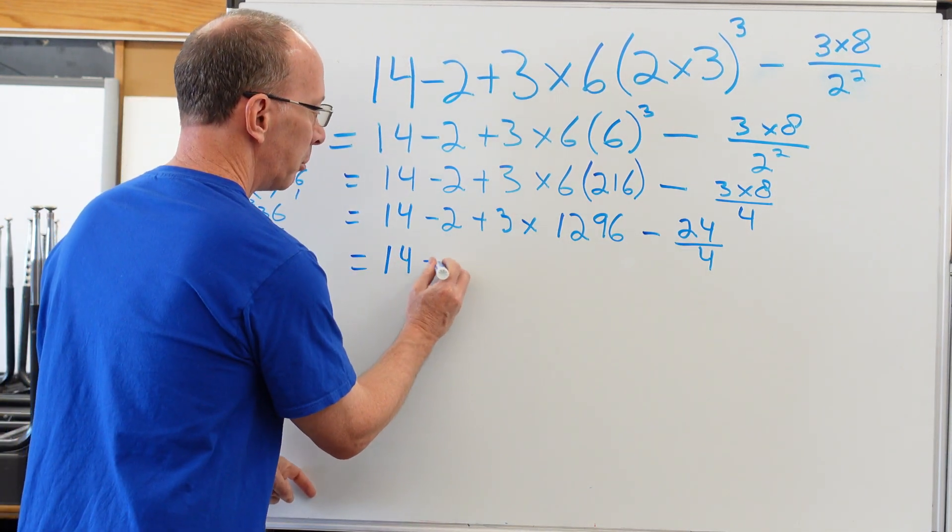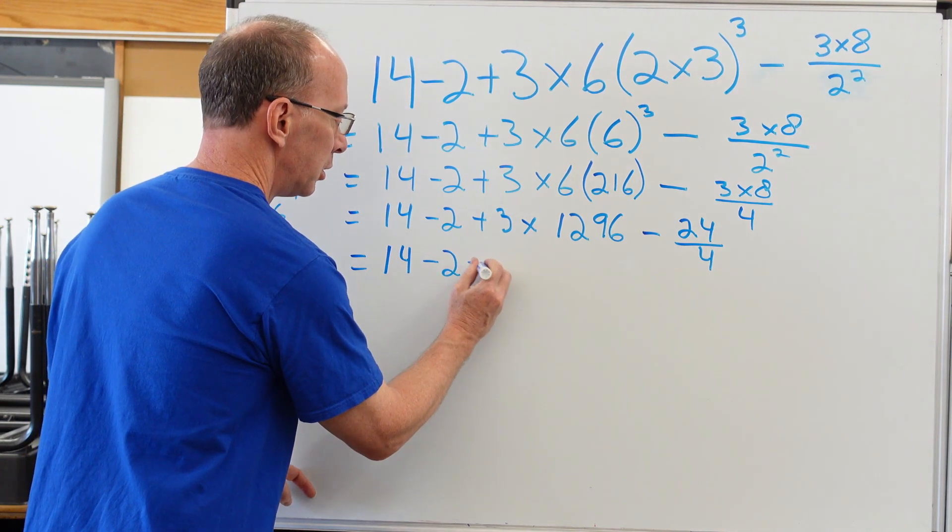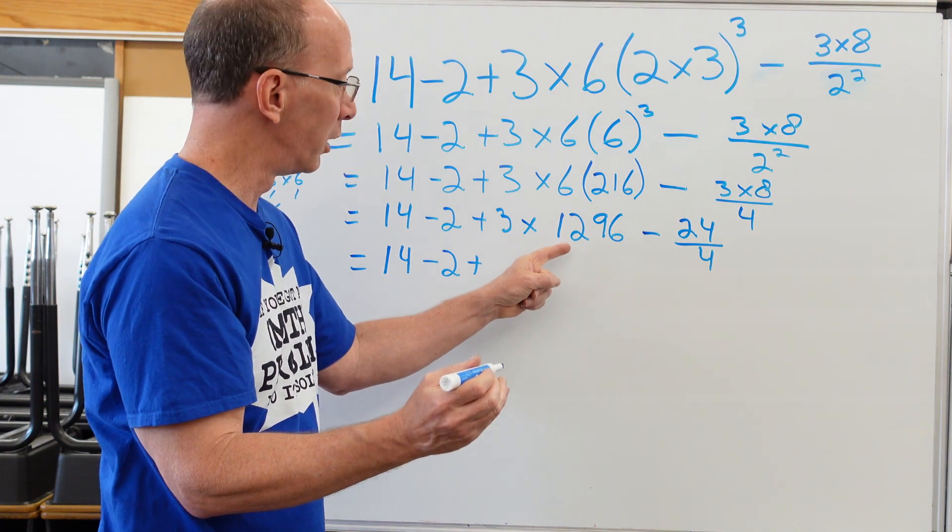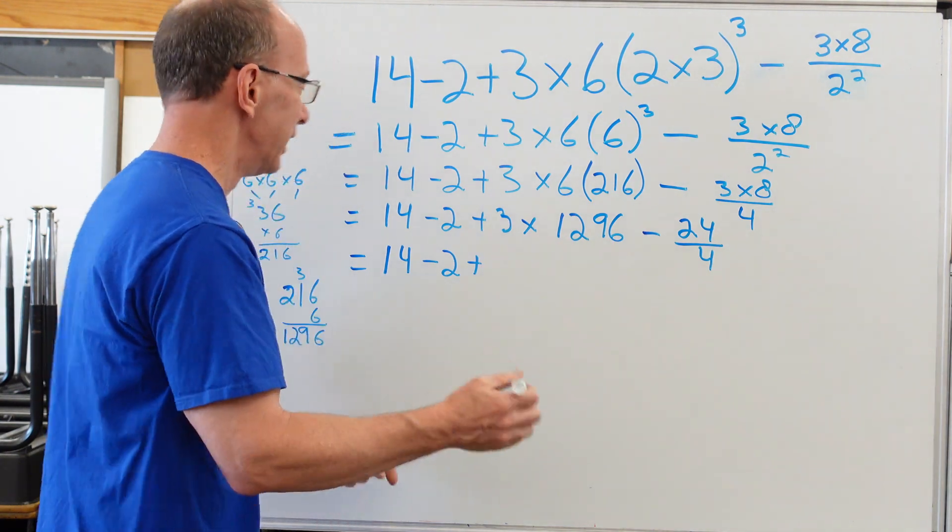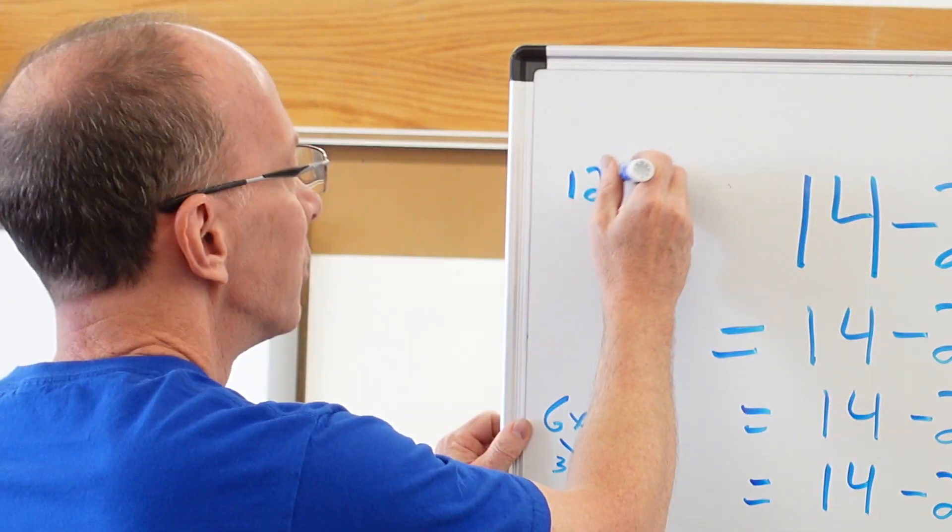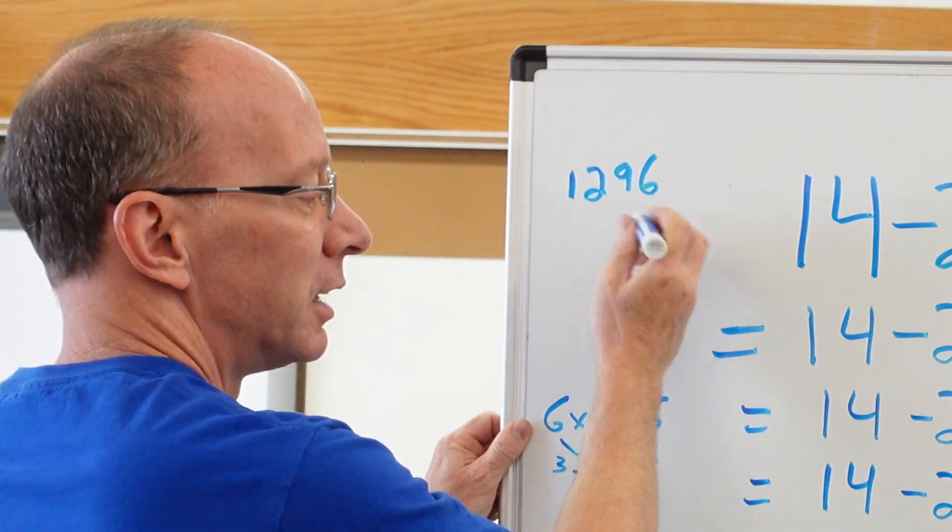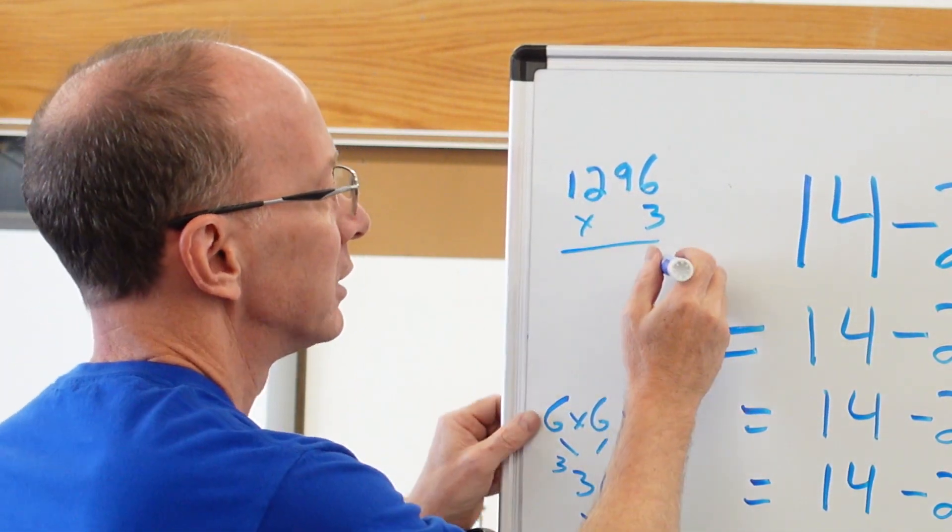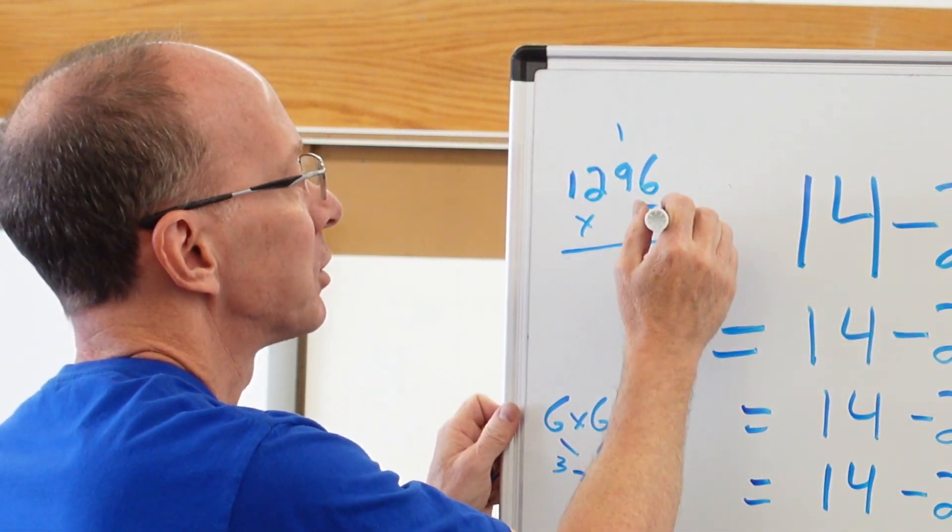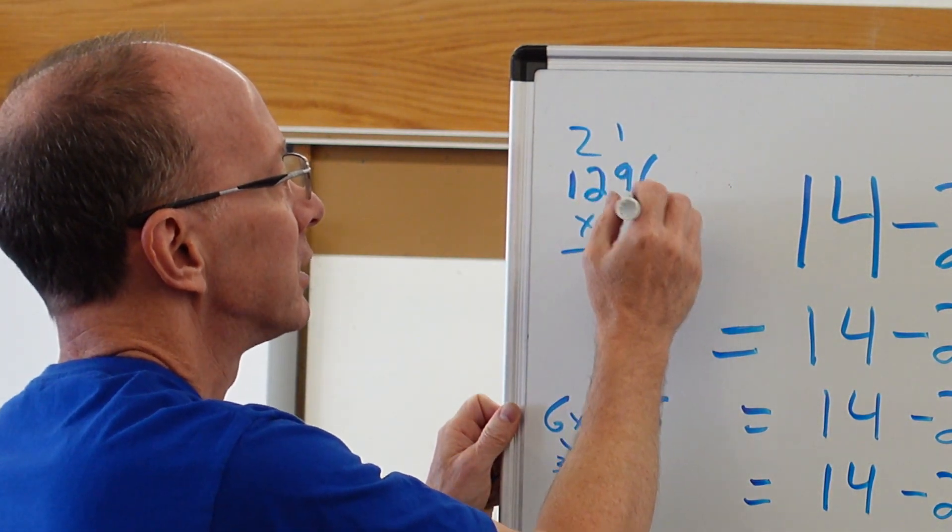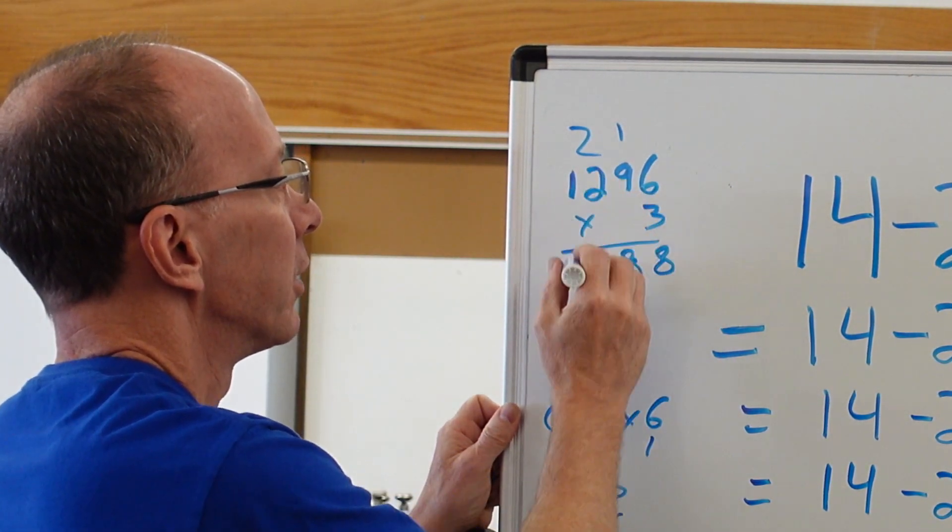So I have 14 minus two plus three times 1,296. Again, I'm going to have to do a little side calculation there. 1,296 times three. So six times three is 18. Carry the one, nine times three is 27, 28, two times three is six, seven, eight, and then three.